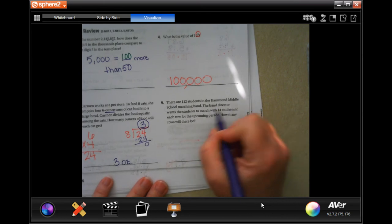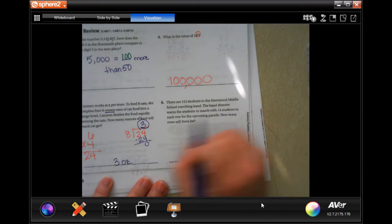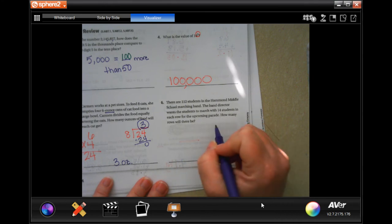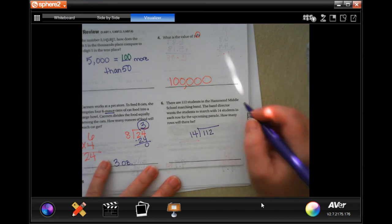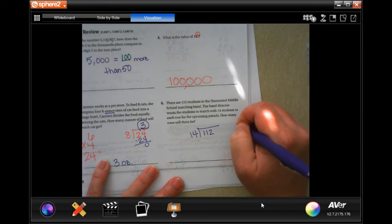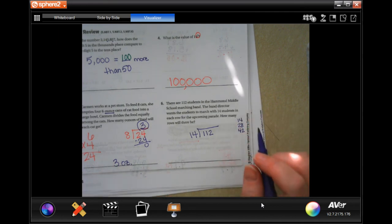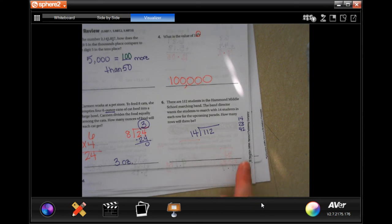There are 112 students in the Hammond Middle School Marching Band. The band director wants the students to march with 14 students in each row for the upcoming parade. How many rows will there be? So 112 divided by 14. Now, I don't know my multiples of 14 past two, which is 28. So no shame in my game, I'm going to use my calculator for my multiples. I'm not using it for my division because I need to know how to get there.